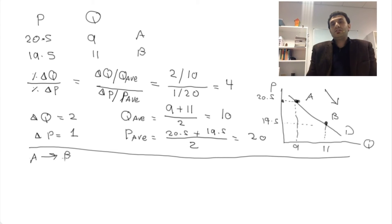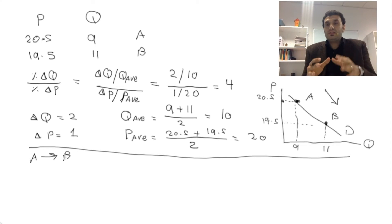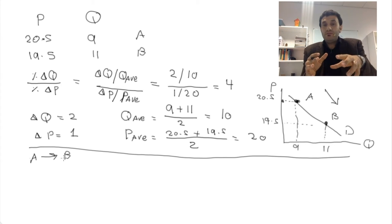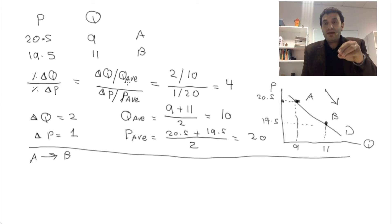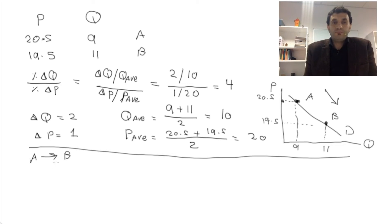So point A is the original point, meaning the original price is 20.5 and the original quantity is 9. We'll follow the same formula, but rather than dividing by the average quantity and average price, we'll divide by the original quantity and original price.